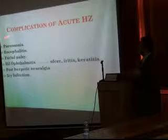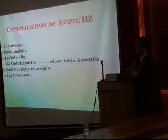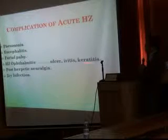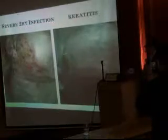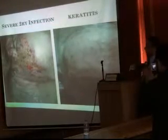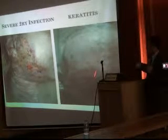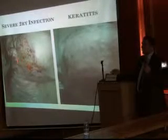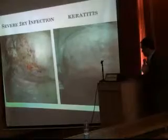Complications of acute herpes zoster include: pneumonia, encephalitis, facial palsy, ophthalmitis, corneal ulcer with iritis or keratitis, post-herpetic neuralgia, and secondary infection. This is a case of keratitis and opacity of the cornea due to herpes zoster of the ophthalmic branch, resulting in severe infection that ended in the patient's death from septicemia.